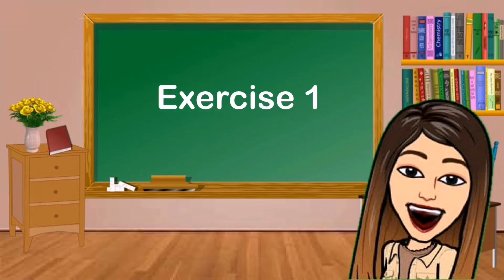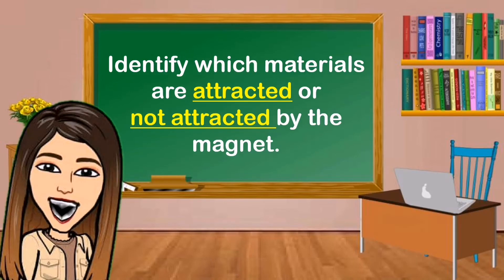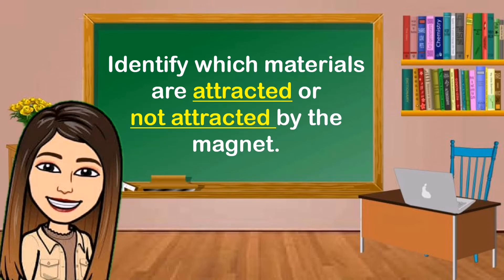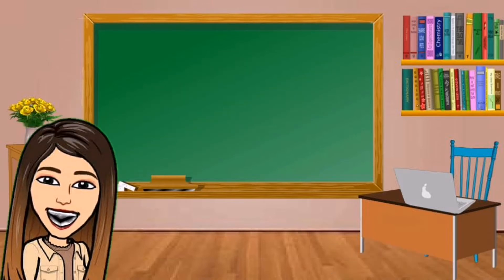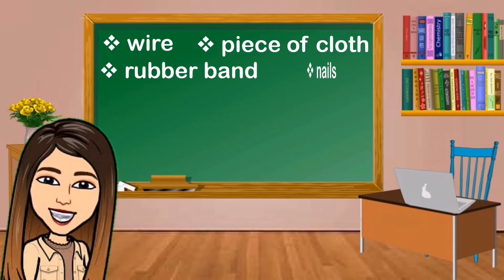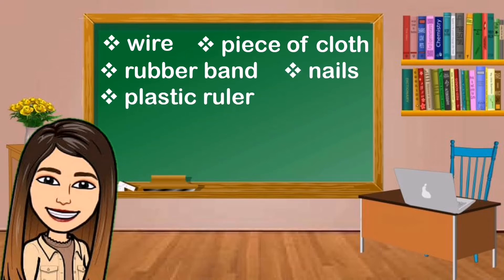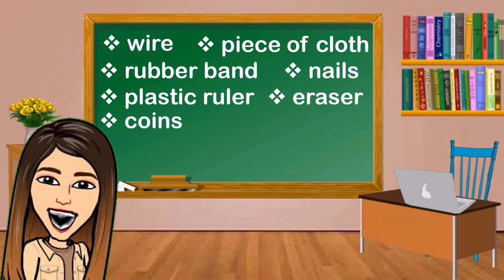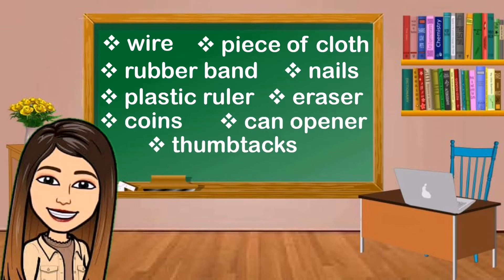Let's try exercise 1. Identify which materials are attracted or not attracted by the magnet. These are the following materials: wire, piece of cloth, rubber band, nails, plastic ruler, eraser, coins, can opener, thumbtacks, and sharp pencil.